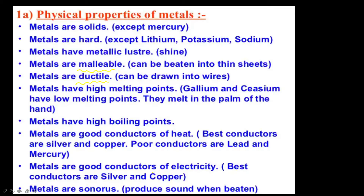Metals have high melting points. Gallium and cesium have very low melting points — they can melt even if kept in your hand. Metals are sonorous — they can produce sound. For example, the brass bell in temples produces sound when hit. Metals have high boiling points. Metals are good conductors of heat. The best conductors of heat are copper and silver. Silver is the best conductor of heat. Poor conductors include lead and mercury.